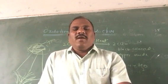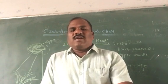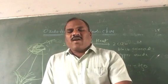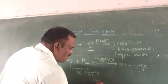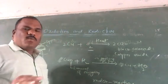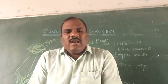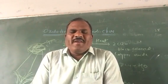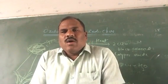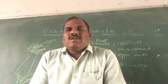Oxidation and reduction especially occur in the same reaction. If one reactant gets oxidized, the other gets reduced. Such reactions are called oxidation-reduction reactions, or redox reactions. Both oxidation and reduction simultaneously take place in one reaction. For example: 2Fe₂O₃ + 3C → 4Fe + 3CO₂, or 2PbO + C → 2Pb + CO₂. These are examples of redox reactions.